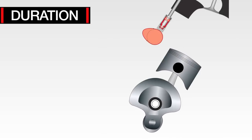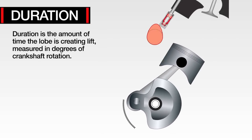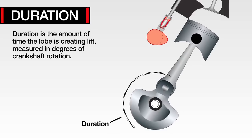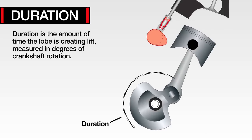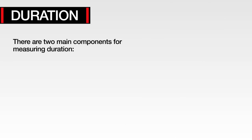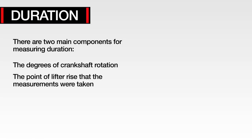We will now move on to duration. Duration is the amount of time the lobe is creating lift, measured in degrees of crankshaft rotation. In other words, it is the number of degrees of crankshaft rotation a cam maintains beyond a given tappet lift. There are two key components for measuring duration: the degrees of crankshaft rotation, and at what point of lift or rise the measurements were taken.